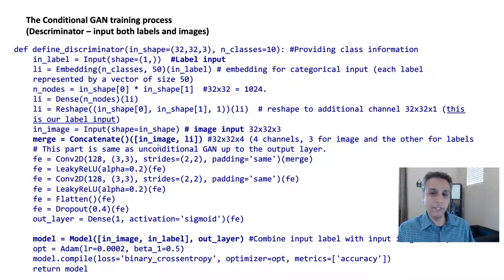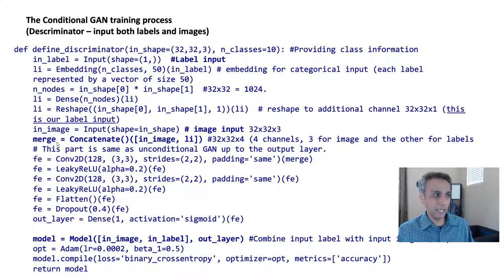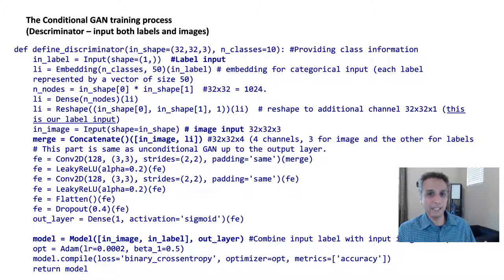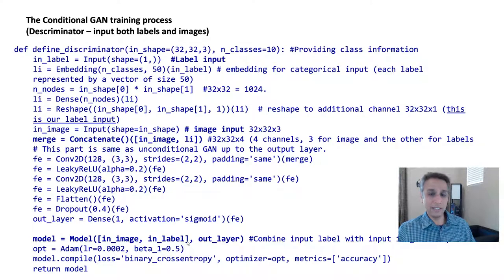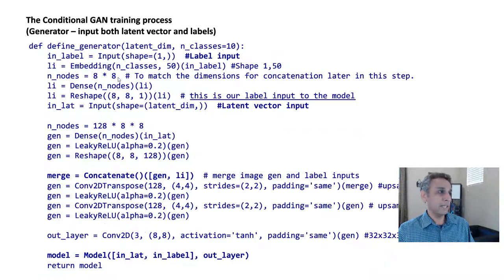After concatenation, everything else is the same as a regular GAN: conv → leaky ReLU → conv → leaky ReLU → flatten → dropout → output. When defining the final model using the functional API, we have two inputs — image input and label input — and one output. The functional API supports multiple inputs, which is why we use it here instead of the sequential method.